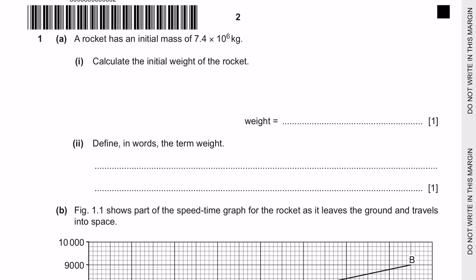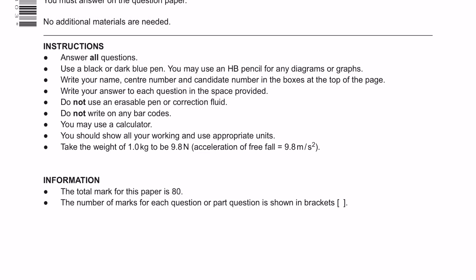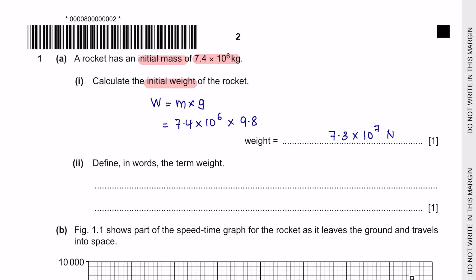Question 1, Part A. A rocket has an initial mass of 7.4 times 10 to the power of 6 kilograms. Part 1: Calculate the initial weight of the rocket. The formula to calculate weight is mass times its gravitational acceleration. You can find the value of the gravitational acceleration to be 9.8. Just put the values in your calculator and you will get the weight 7.3 times 10 to the power of 7, and don't forget the units for weight is newtons.